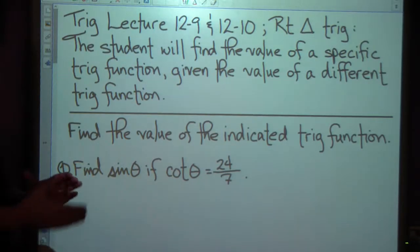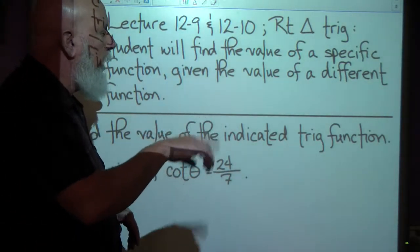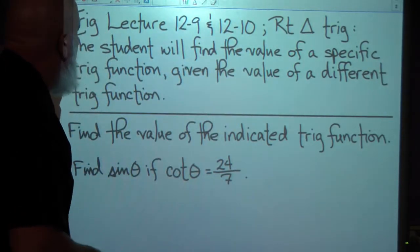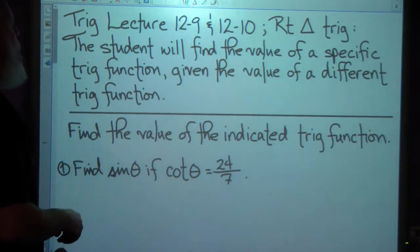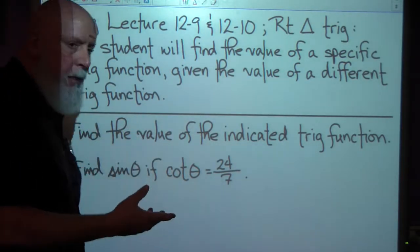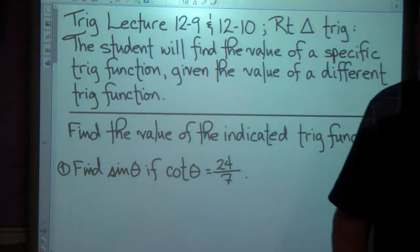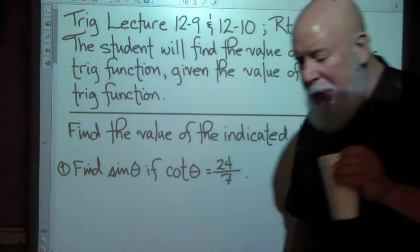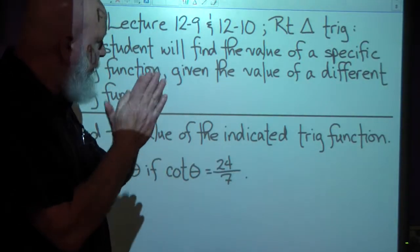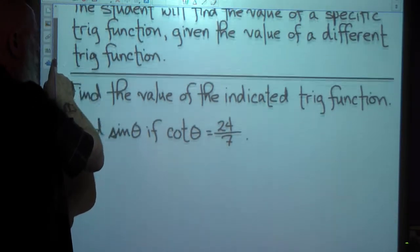Trig lecture 12-9 and 12-10: right triangle trig. We're not going to be doing any rotation or anything like that — we're just going to be talking specifically about right triangles. The student will find the value of a specific trig function given the value of a different trig function. This should ring a bell; it's kind of a review of stuff we've done in the past. You should get this fairly easily — a little walk down memory lane.